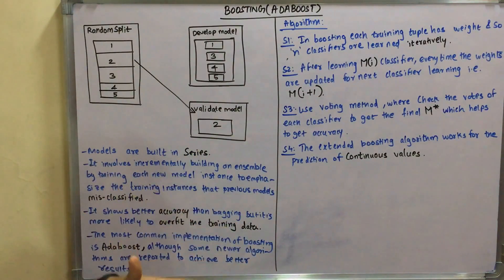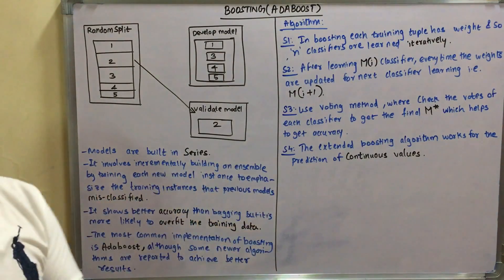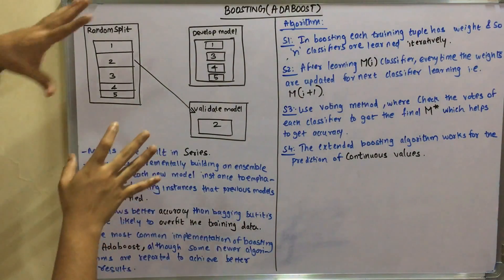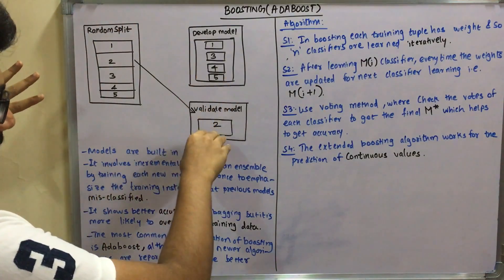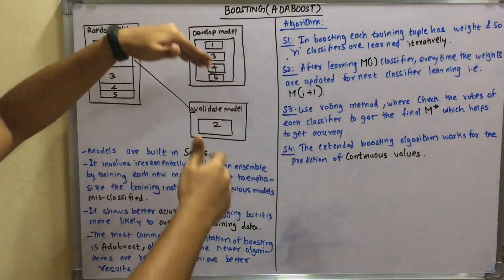To emphasize the training instances that the previous model misclassified. For example, if this model validates or fails to validate any of the development models from any of the splits one, three, four, or five, then that would be overcome.